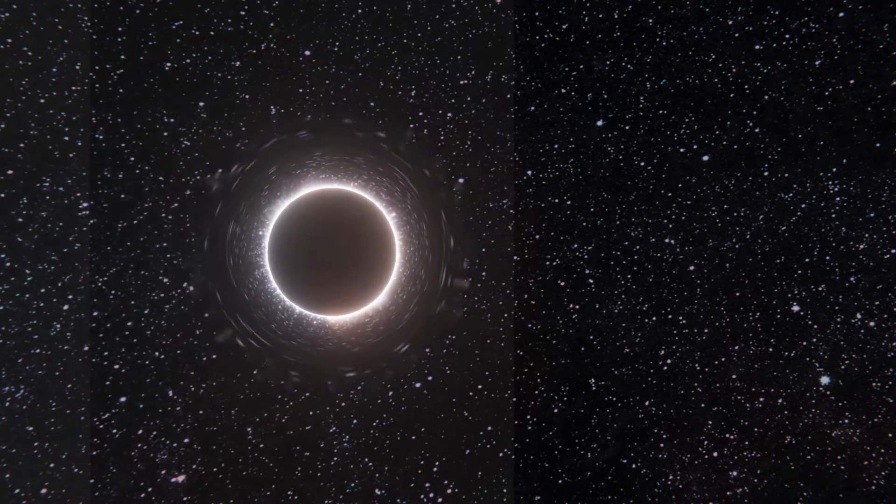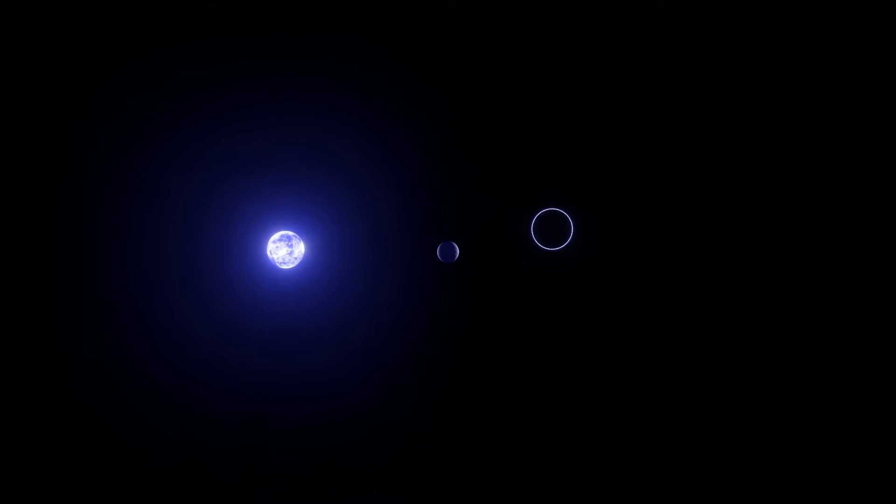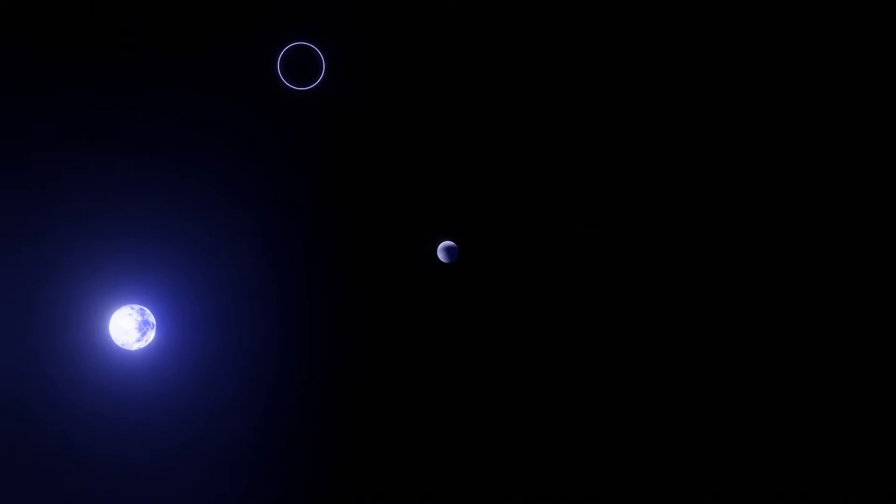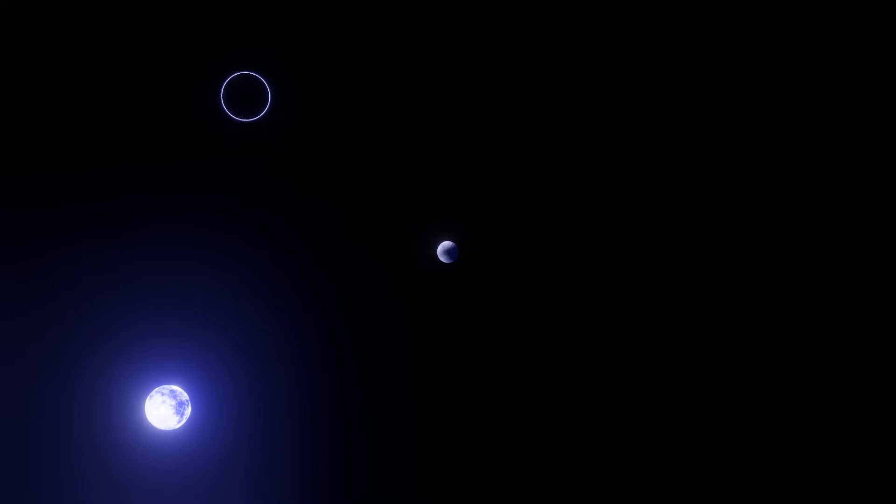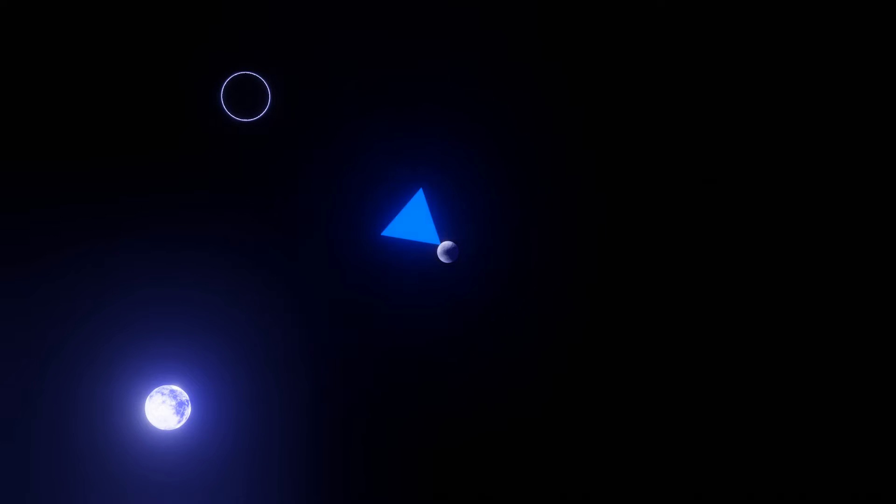And the more gravity, the more extreme the lensing. Take this model showing a planet, a star, and a black hole. Let's pretend that we are standing on the planet and have our telescopes pointed in this direction.